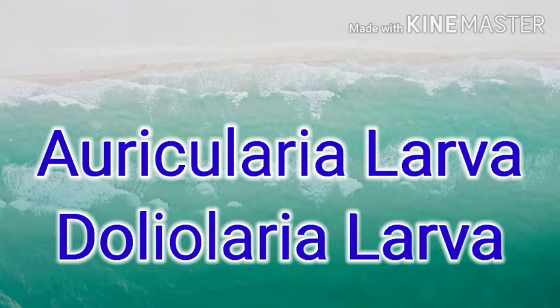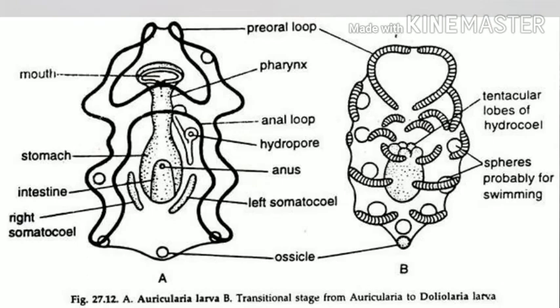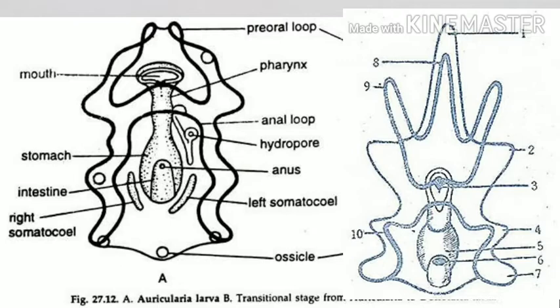The auricularia larva resembles the bipinnaria larva of Asteroidea. It possesses four or five pairs of ciliated arms for swimming and has a well-developed mouth, gut, and anus. The pre-oral lobe is very well formed. There are no calcareous rods; instead they are replaced by spheroids or star-shaped or wheel-like bodies.